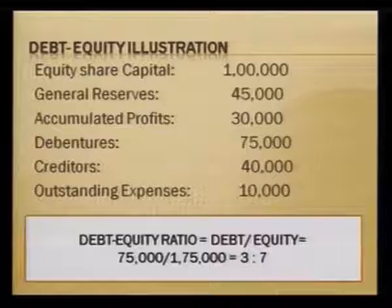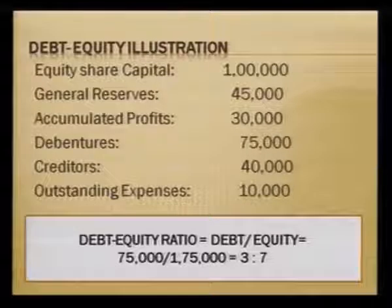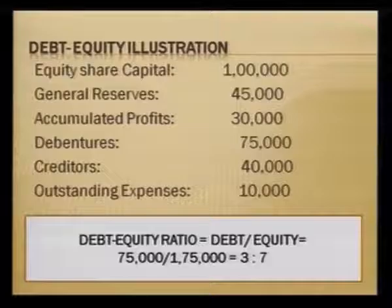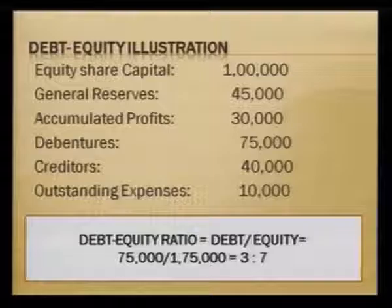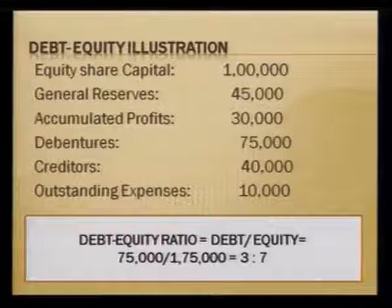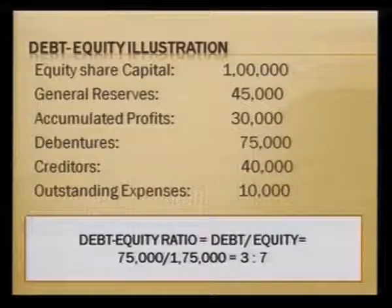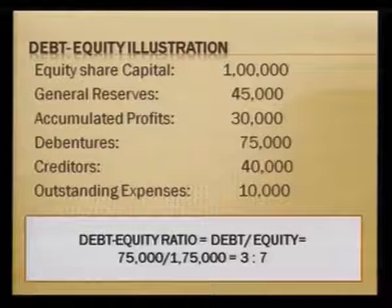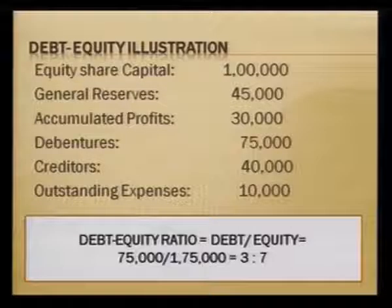To illustrate: assume equity share capital is ₹1 lakh, general reserves ₹45,000, accumulated profits ₹30,000, debentures ₹75,000, creditors ₹40,000, and outstanding expenses ₹10,000. Debt to equity uses only long-term loans — here, debentures are the only long-term loans. Creditors and outstanding expenses are current liabilities and are excluded. So debt is ₹75,000 and equity is ₹1,75,000, giving a ratio of 3:7.